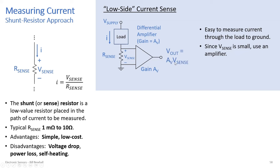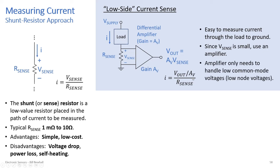You're trying to amplify V_sense to some output value, so the output would be A_v times V_sense. You calculate I as V_out divided by A_v, which gives you V_sense divided by R_sense. That way you have a reasonable amplified output voltage to measure, and you can calculate the current based on that output voltage. One advantage of low-side sensing is that the amplifier only needs to handle low common-mode voltages.